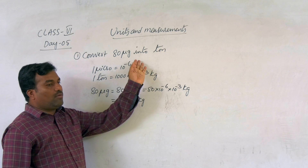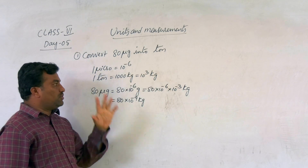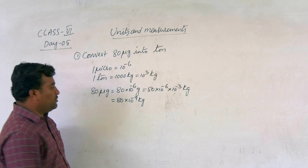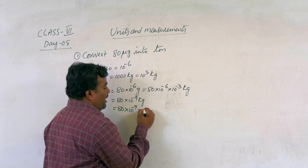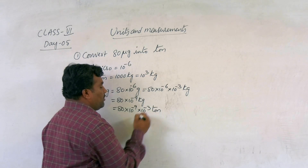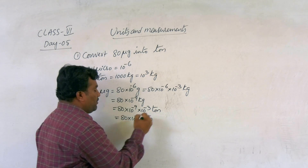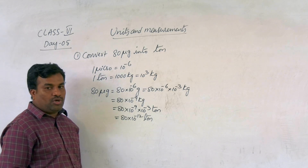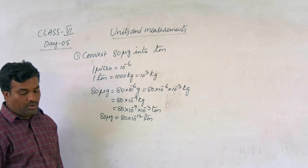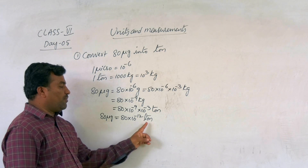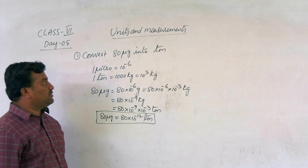But we want to convert to tons. 1 ton equals 10 to the power of 3 kg, so kg is converted to tons. Therefore, 80 into 10 to the power of minus 9 divided by 10 to the power of 3 gives 80 into 10 to the power of minus 12 tons. So 80 microgram equals 80 into 10 to the power of minus 12 tons. This is the conversion of 80 microgram into ton.